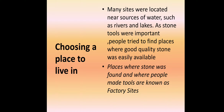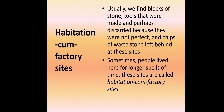Places where stone was found and where people made tools were given the name factory sites. Usually we find blocks of stone, tools that were made and perhaps discarded because they were not perfect, and chips of waste stone left behind at these sites. Sometimes people lived at these locations for longer periods and these sites became known as habitation-cum-factory sites.